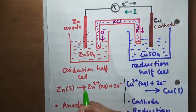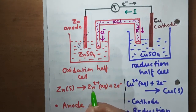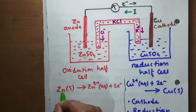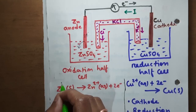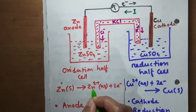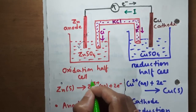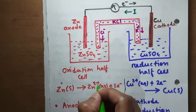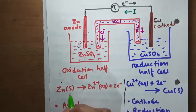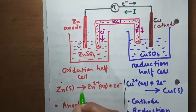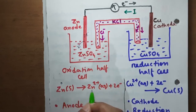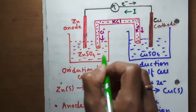This is oxidation because there is an increase in oxidation number. Zinc's oxidation number on the left-hand side is 0, and on the right-hand side it is plus 2. Therefore, the oxidation number is increasing in this reaction, and zinc undergoes oxidation in this half cell.